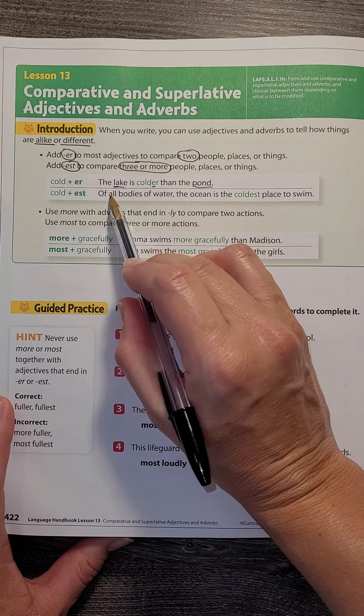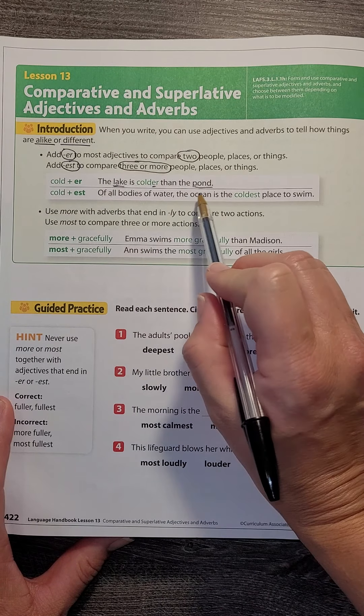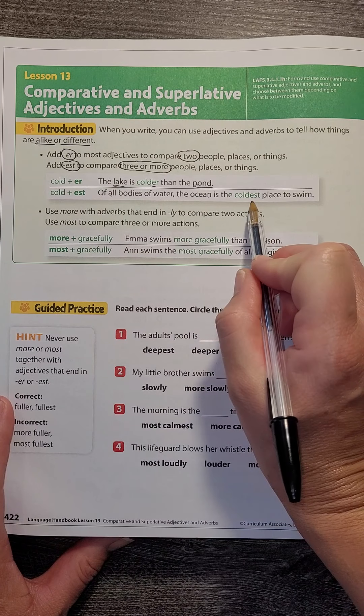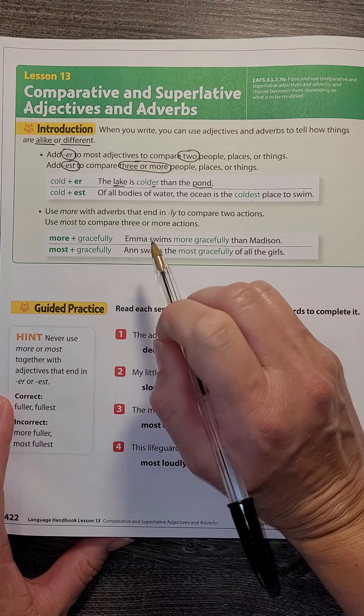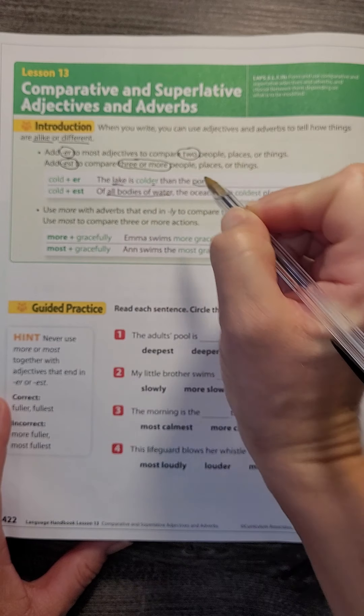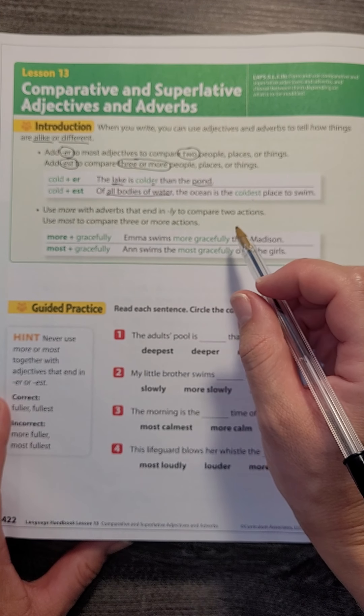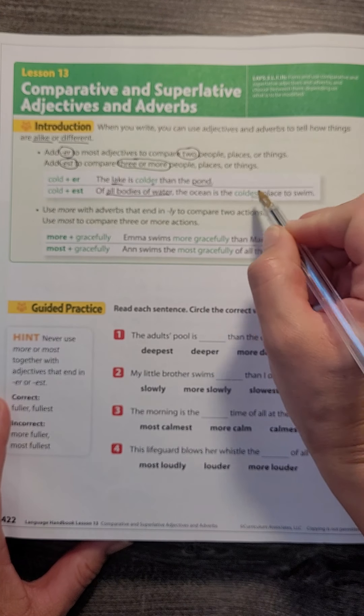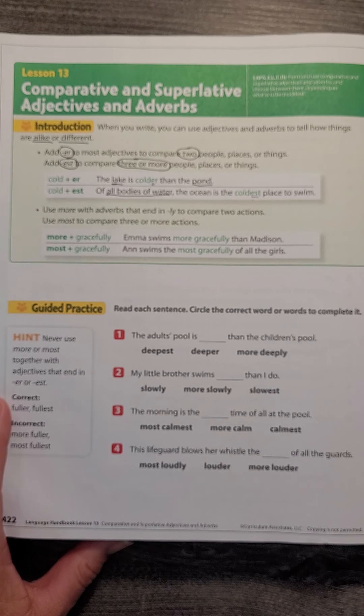Of all bodies of water, the ocean is the coldest place to swim. All bodies of water—well, there's more than three bodies of water in the world, so we say -est. Coldest.